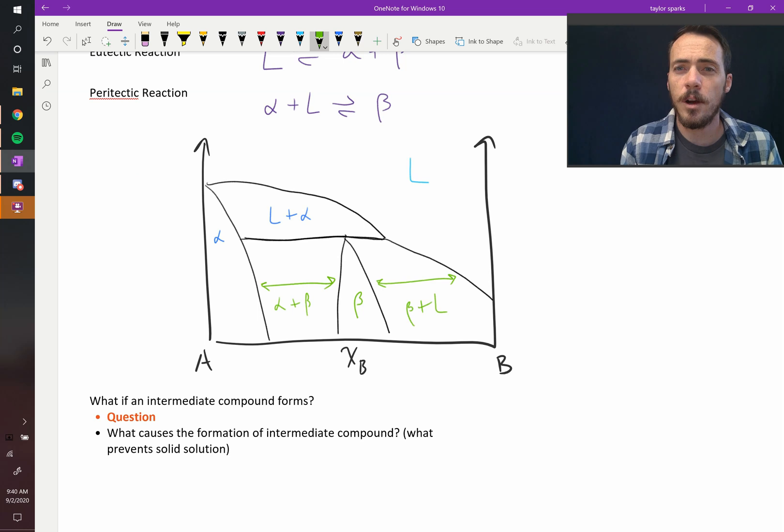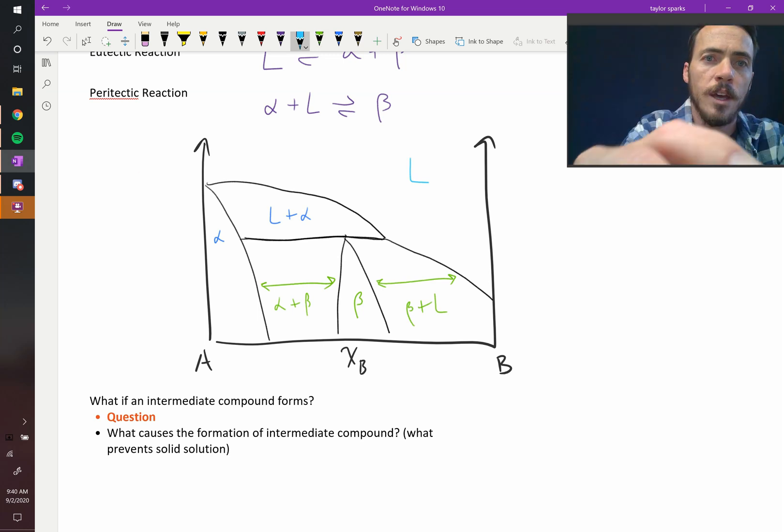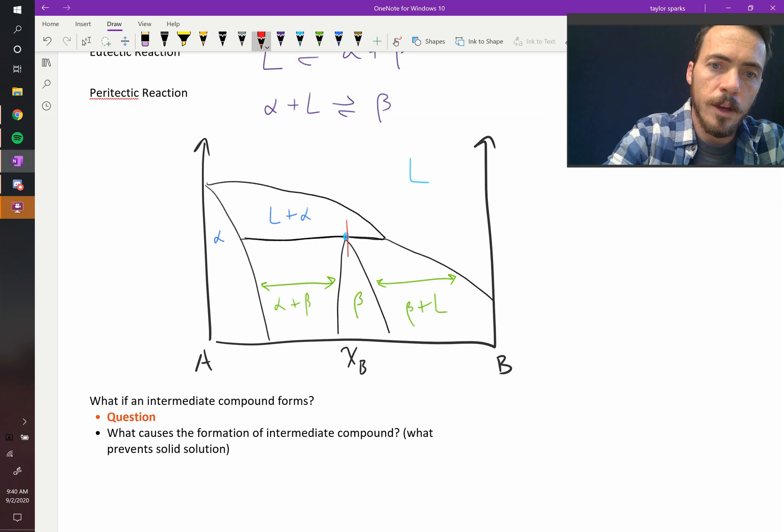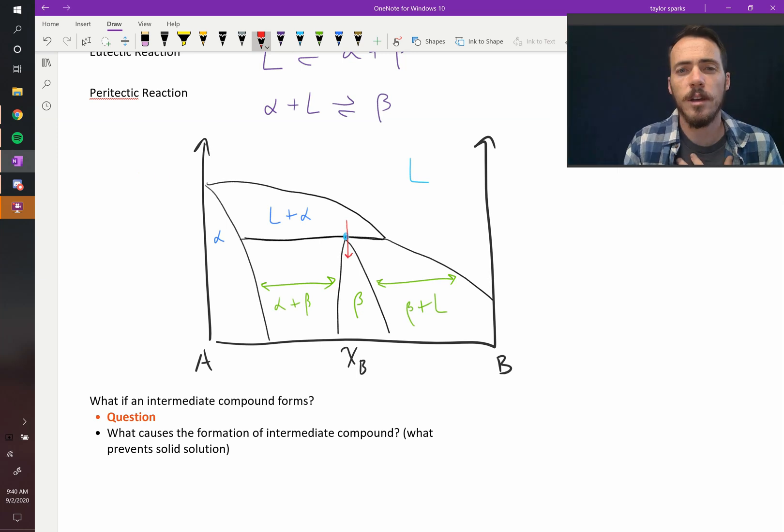Now, can you see the peritectic reaction here? Hopefully, you can. And you'll notice that it's right there at that point. If you cool down through that point, you will go from having a liquid plus alpha, and then, once you go through that point, you'll be left with just beta. So, that is a peritectic reaction.